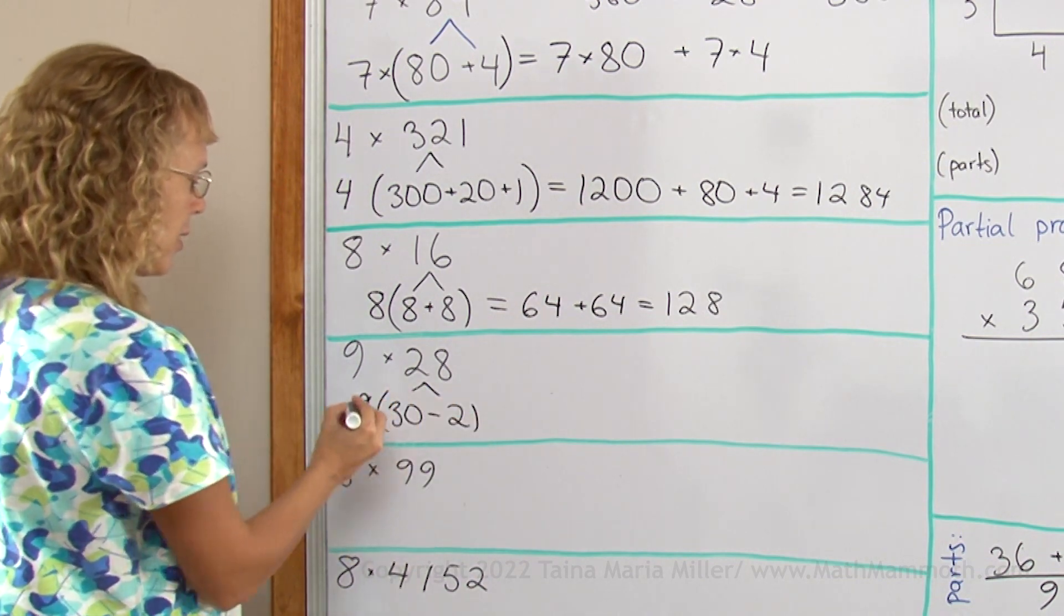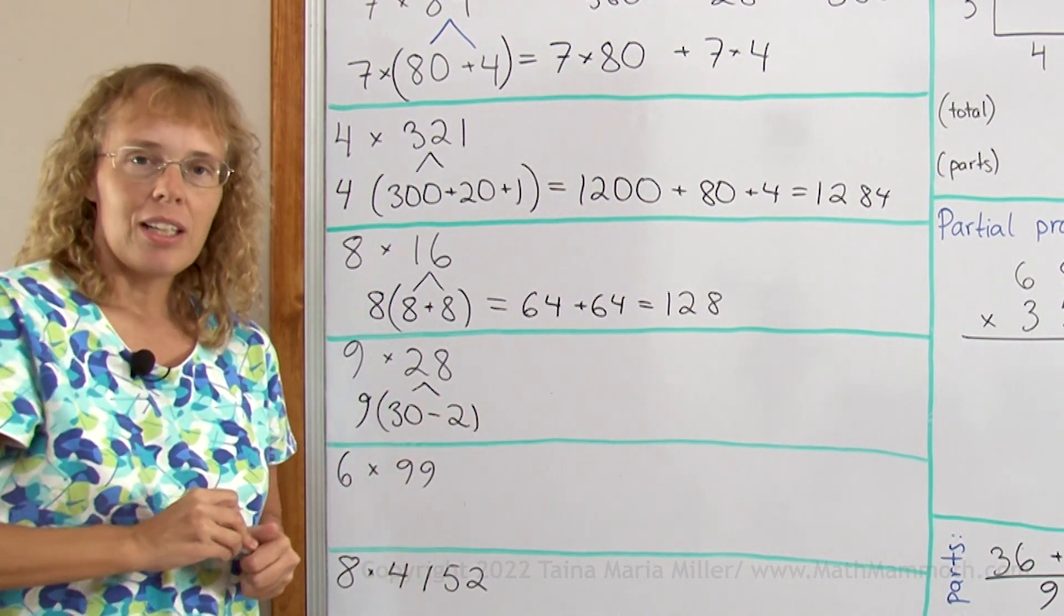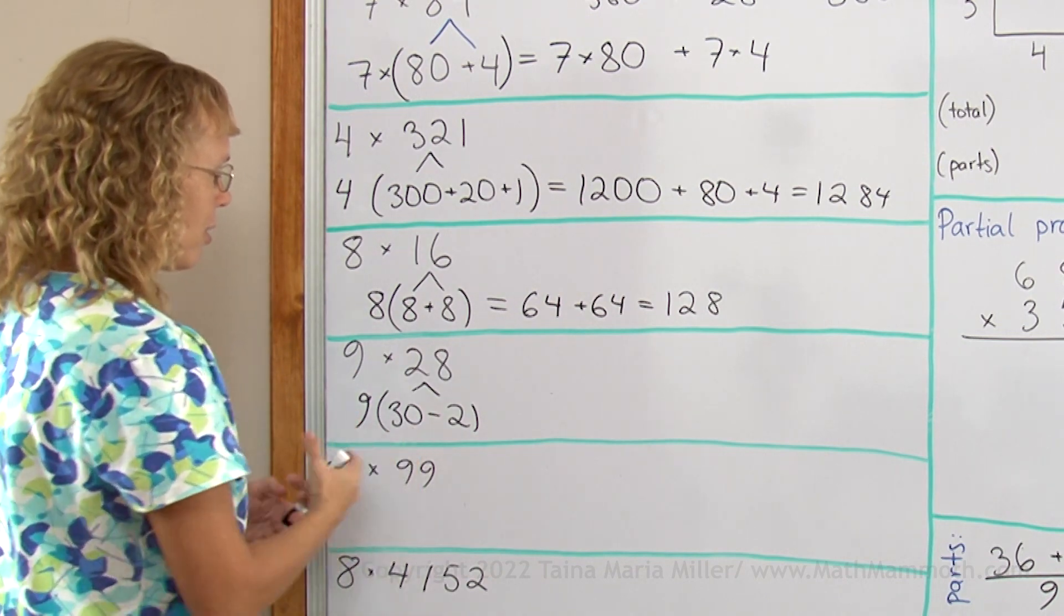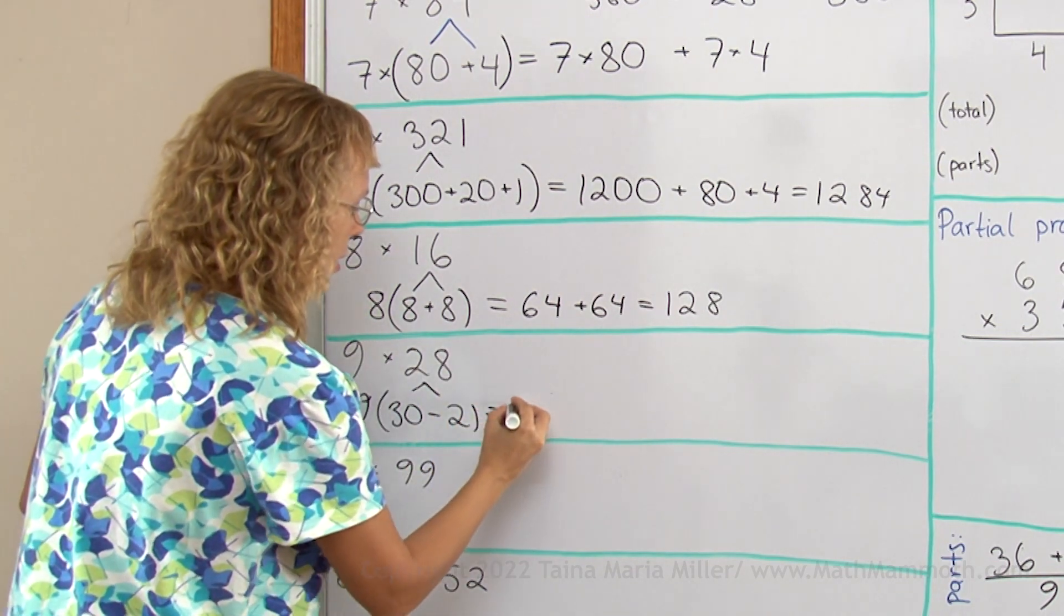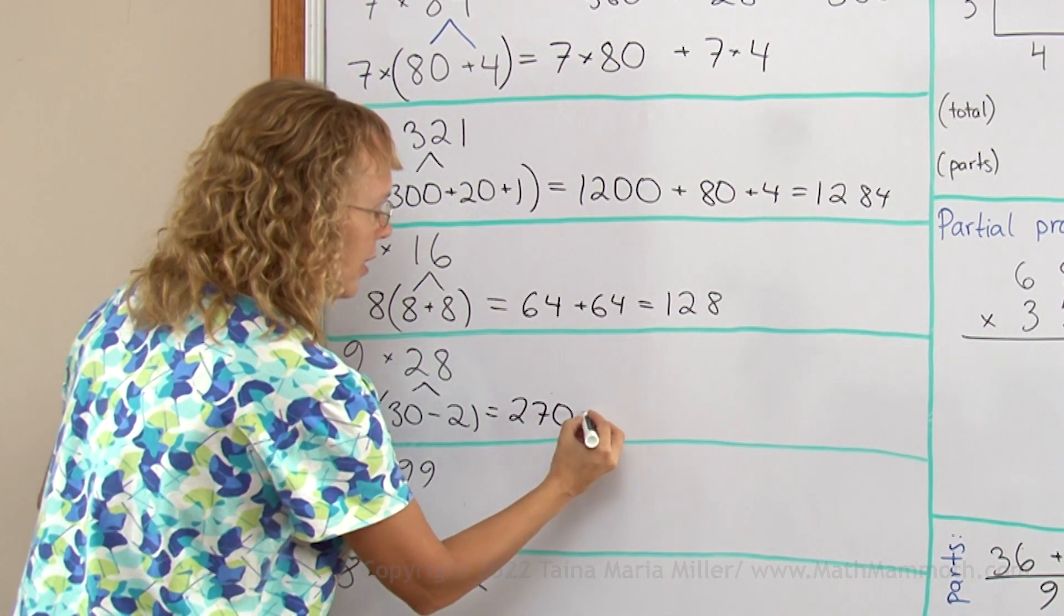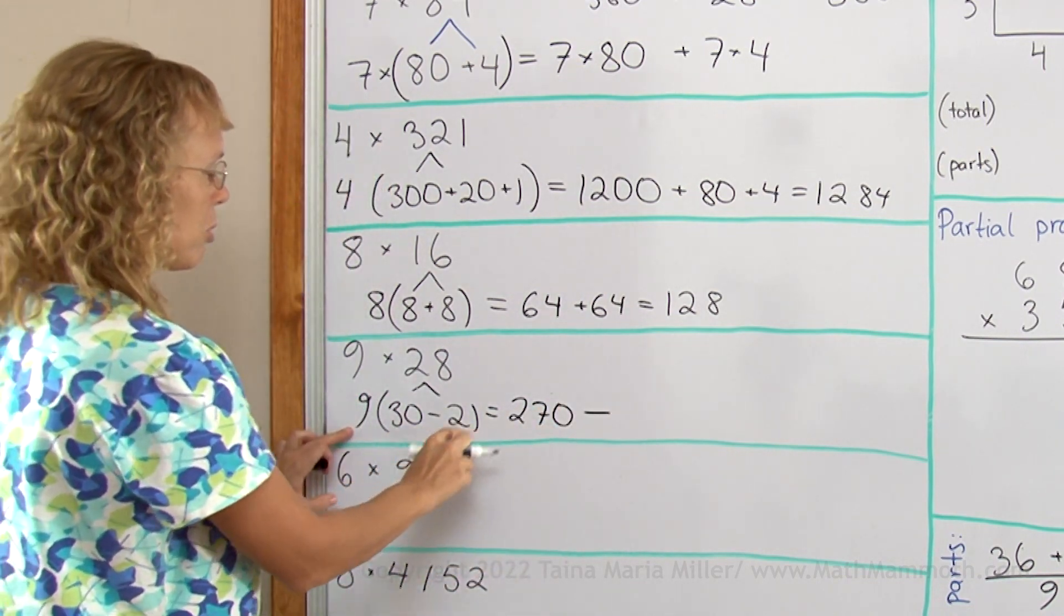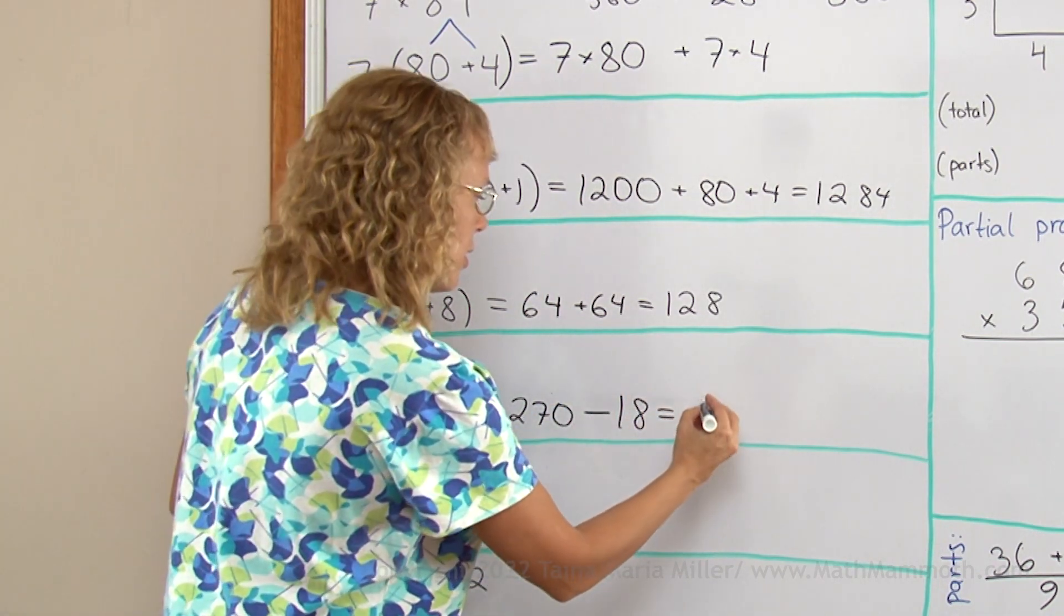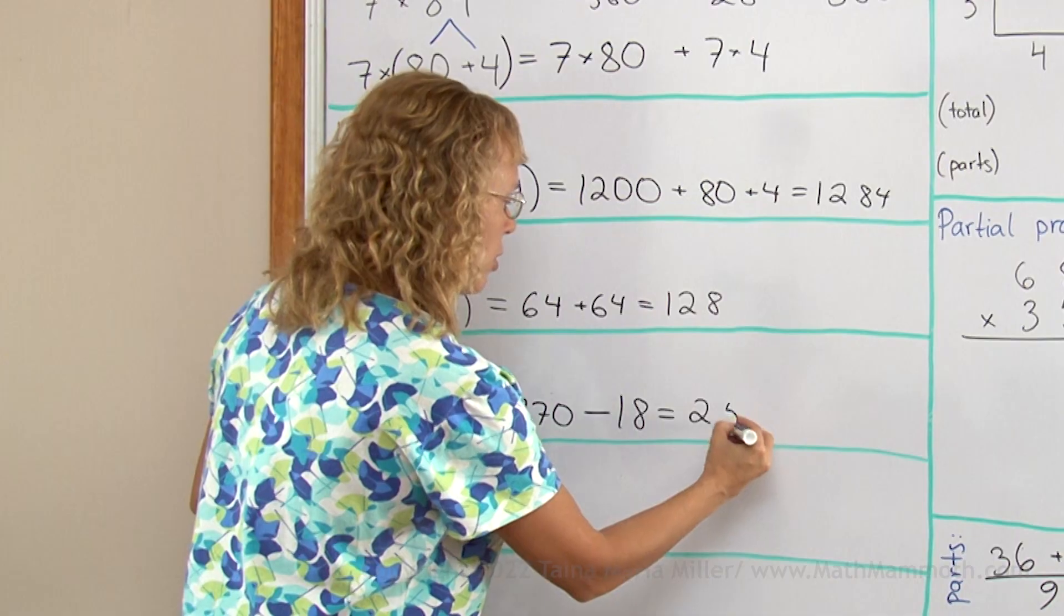And then take that 9 times. And now I will multiply in parts, but there will be a subtraction. 9 times 30 is 270, and then take away, or minus, 9 times 2 which is 18. And so we get here 252.